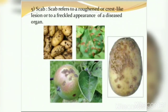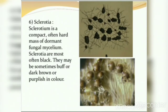Fifth is scab, found in potato and apple. Scab refers to roughened or crust-like lesions giving a freckled appearance to the diseased organ — a rough surface structure appearing in both apple and potato. Sixth is sclerotia — a compact, often hard mass of dormant fungal mycelium. Sclerotia are most often black, but may sometimes be dark brown or purple.